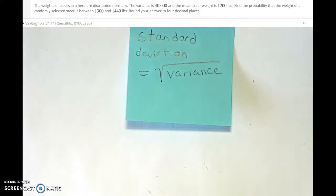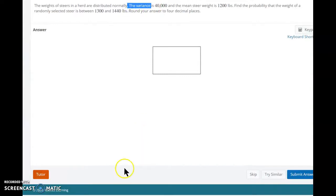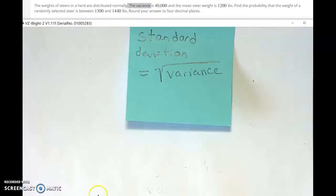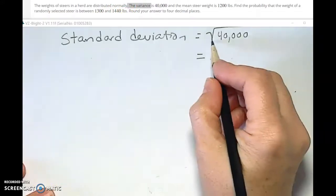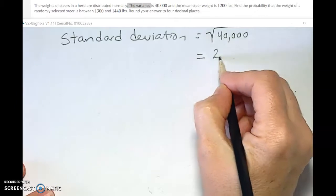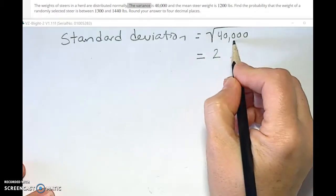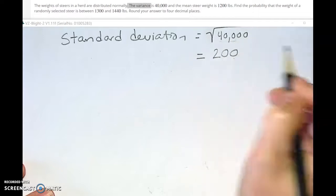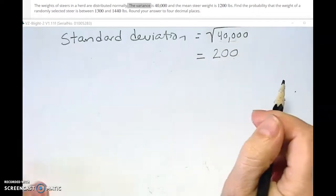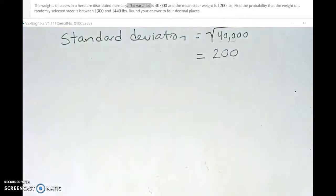The first thing we should probably address is that in this problem they actually give us the variance rather than the standard deviation, and I'm not sure why they chose to do this in this book, but a lot of statisticians talk about variance rather than standard deviation. So let's find the standard deviation so that we can draw a normal curve. The square root of 4 we know is 2, and we know 10 times 10 is 100, and 100 times 100 is 1,000. So standard deviation for this problem is 200.